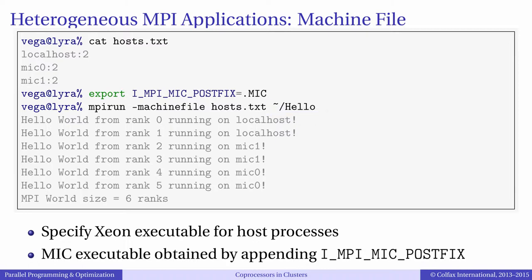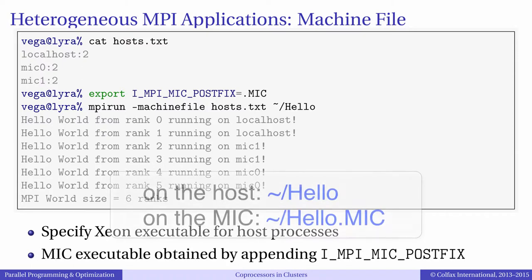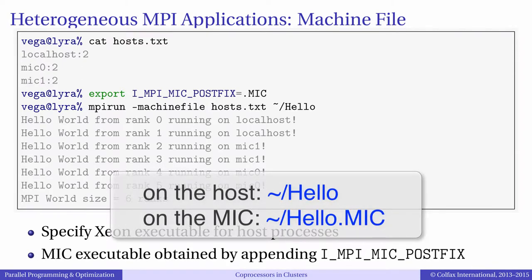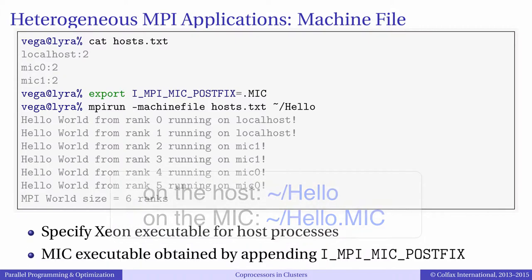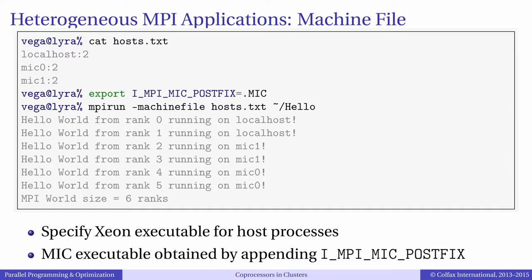The solution for Intel MPI is the environment variable I_MPI_MIC_POSTFIX. We can set it to some string value — in our case, dot mic. This tells Intel MPI that the name of the executable for CPU architecture is hello and the name for the MIC architecture is hello.mic. There is also a corresponding environment variable to indicate the prefix rather than postfix, which may allow one to have CPU and MIC executables in different directories.